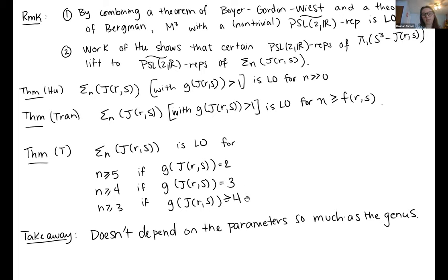As the genus increases, we get better and better bounds. When the genus is at least 4, this is the generic case, we actually get best possible bounds. I didn't write this, but it's known that when N is 2, you don't have left orderability. This means in this situation we actually know what's going on with every single branch cover of each of these specific knots. One thing I want to point out about this result is that it doesn't depend on the parameters so much as the genus, which is kind of interesting.